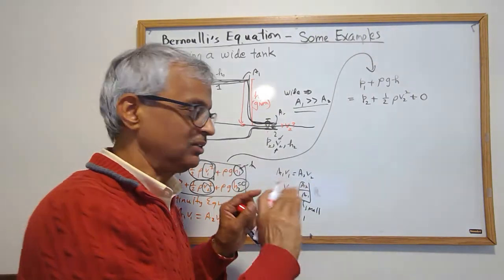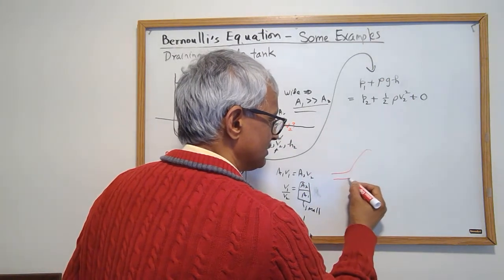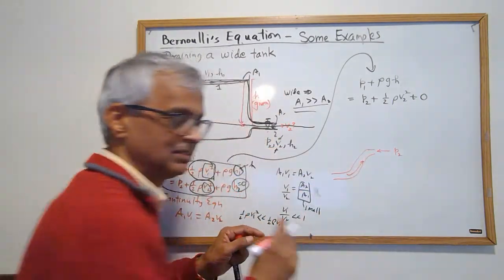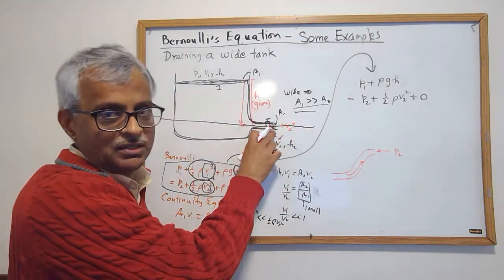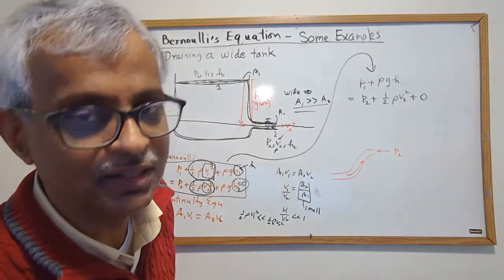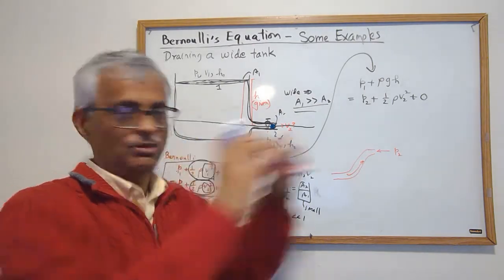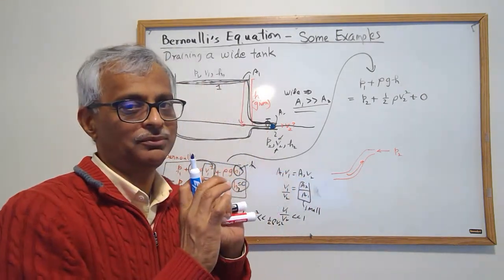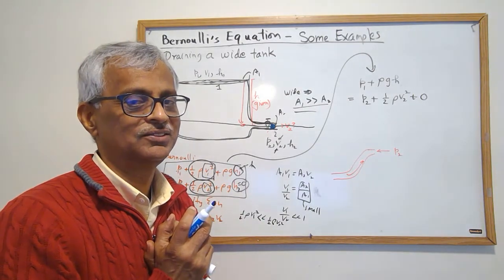If you remember how Bernoulli goes, why it's wrong can be traced to how Bernoulli goes. Bernoulli says p2 is the pressure against which you're pushing when the fluid is coming out. So if I'm here, I ask you, what is the pressure you're pushing against? Take a moment to think about it.